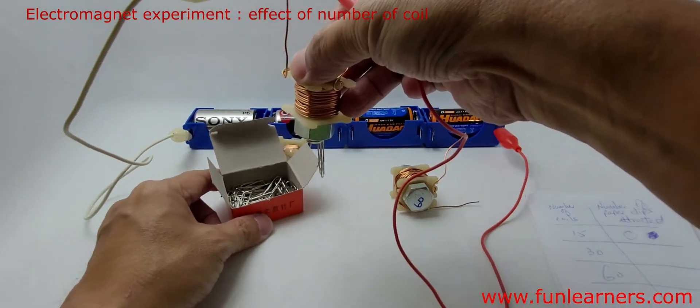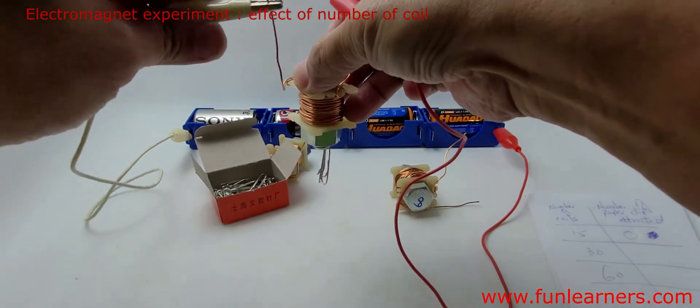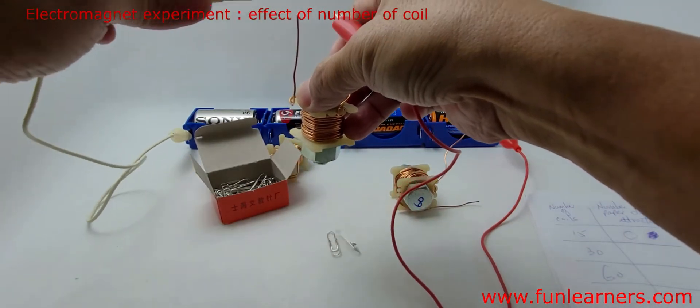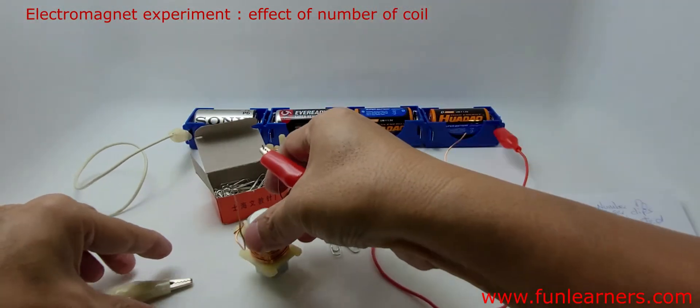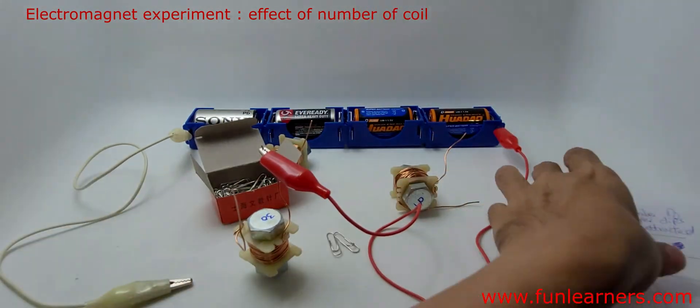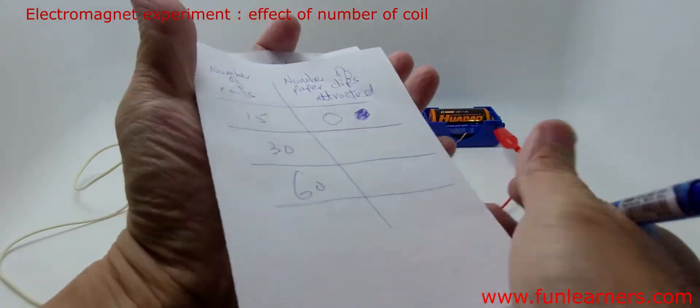Next we shall try 30 coils. Two paper clips attracted — so we have two paper clips attracted with 30 coils.